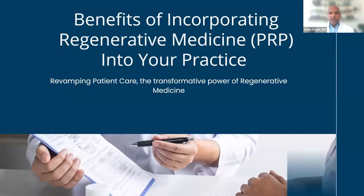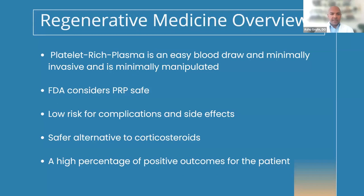I want to focus primarily on PRP. When you're first getting started with regenerative medicine, PRP is the easiest way to do this. It involves a simple blood draw, taking the blood, spinning it in a centrifuge, and separating out the different blood components. The FDA considers it safe as long as PRP is used in a musculoskeletal, spine, or aesthetic space. There is a very low risk for complications — usually related to the procedure itself and the skill of the provider.